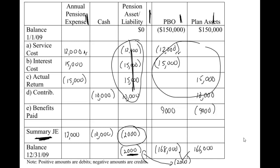This was our baseline video covering the first three components of pension expense: service cost, interest cost, and actual return. Next we'll add prior service cost and start amortizing it, continuing to build over the next several videos. Hopefully this helped get you started — please share these with your classmates, especially come test time. Thanks everyone!